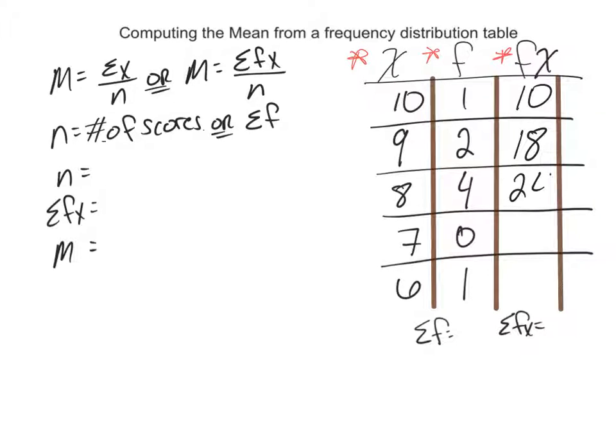And then 8 times 4 you have 24, 7 times 0 is still 0, and then 6 times 1 is 6.